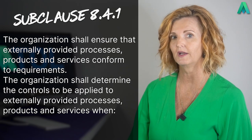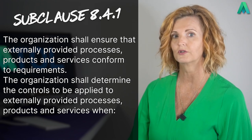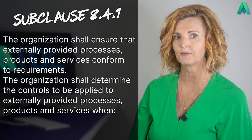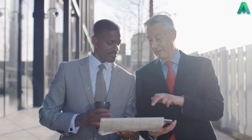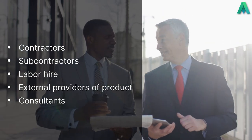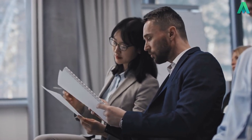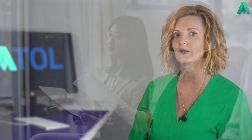This clause starts off with sub-clause 8.4.1, which states the organisation shall ensure that externally provided processes, products and services conform to requirements. The organisation shall determine the controls to be applied to externally provided processes, products and services. So basically, as a business, we are required to manage any services provided by contractors, subcontractors, labour hire or external providers of product or services like consultants. It's up to the business to determine what the controls are to manage them.